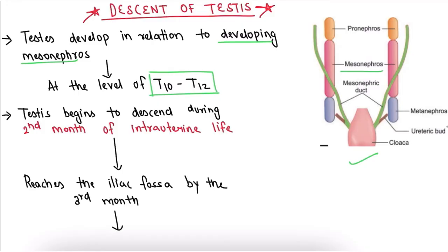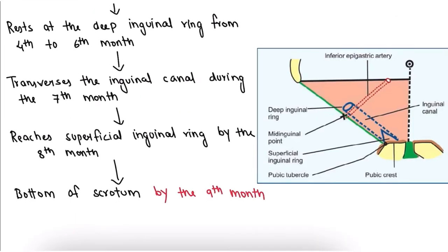The testes begins to descend during the second month of intrauterine life and reaches the iliac fossa by the third month.